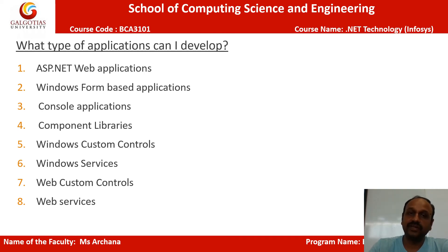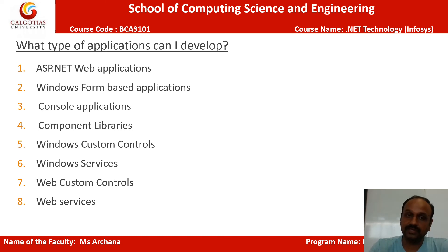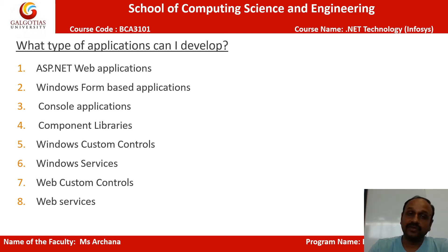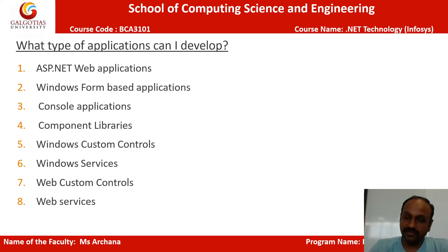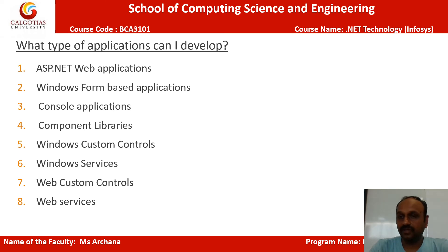What types of applications can be developed on the .NET platform? You can develop ASP.NET web applications, Windows Form-based applications, console applications, and different types of component libraries. You can create your own custom controls helpful in form designing, or even publish them to the Google or Microsoft Play Store. Apart from that, you can create Windows services for different types of integration purposes, web services, and custom web controls. These are all the different types of applications you can develop with the .NET platform.